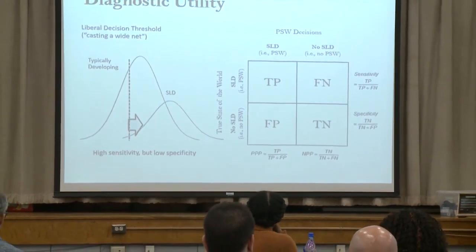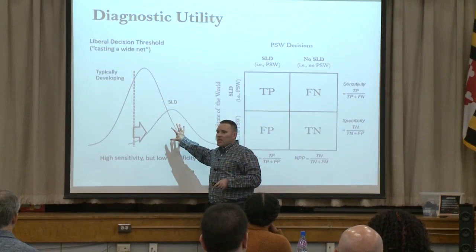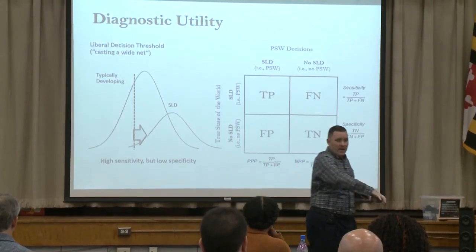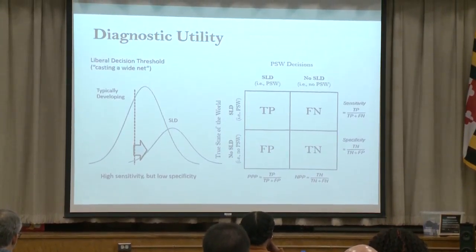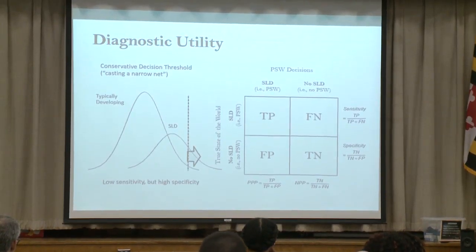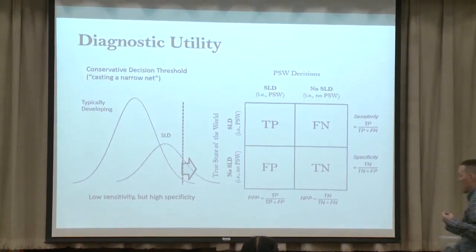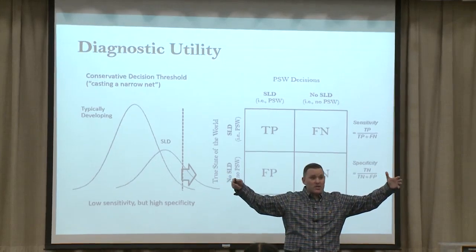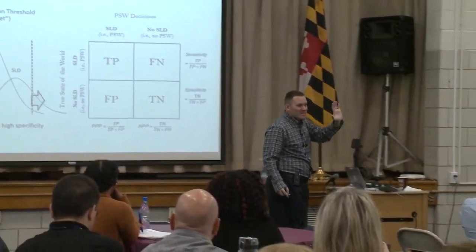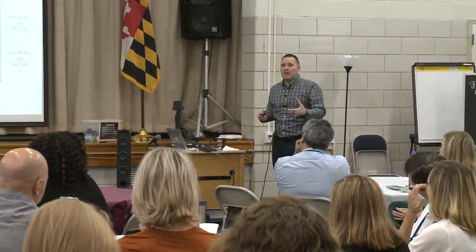If I cast a wide net to get every kid that potentially has LD, I'm also going to capture a lot of kids that don't — so I'll have a lot of false positives. On the other hand, if I'm very conservative, I don't want to be wrong with my positive test at all. I'll capture far fewer of the LD kids relative to the total population, but most of my decisions will be right. So somewhere on this continuum we have to balance, and we want this information beforehand so we can make that decision.